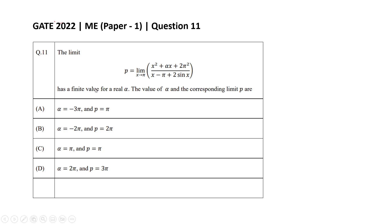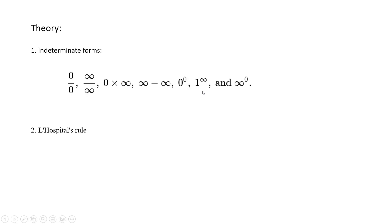Hello everyone, in this video we will solve GATE 2022 ME set one question number 11. This question is from engineering mathematics, from the topic limits. The question is: the limit p, limit x tending to pi of this expression has a finite value for a real alpha. Find the value of alpha and the corresponding limit p.